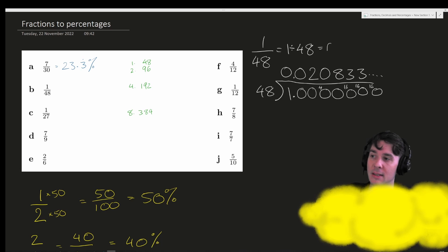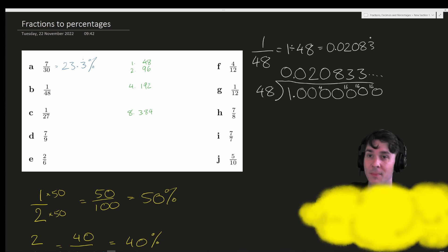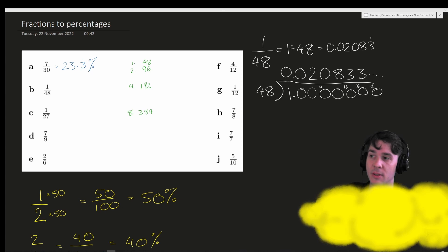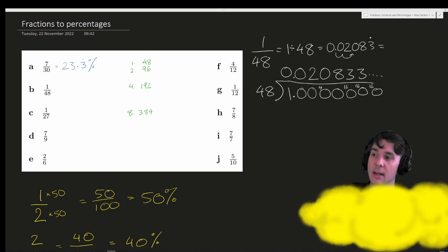So 1 over 48 is 0.02083 with the repeating dot over the 3. When we turn this into a percentage we need to multiply by 100, so the decimal place will move twice to the right, and we will get 2.083 repeating percent.